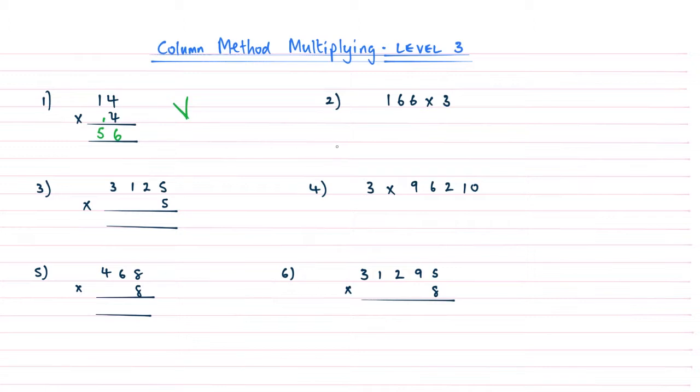Question number 2, so in this one the actual Column Method is not set up itself, so we have to do that. So we write the 166 above, then we write the 3 underneath, draw your 2 lines in, put a times sign and then again this pattern, that pattern is what we're going to follow.